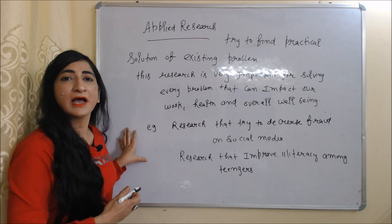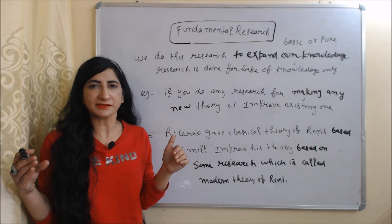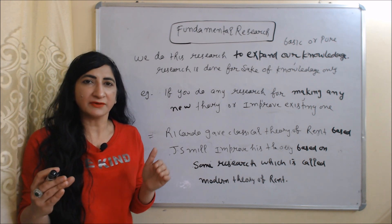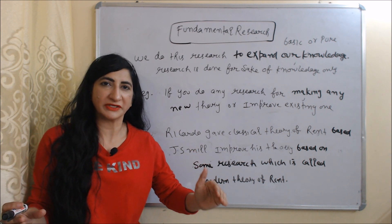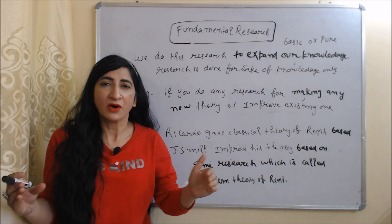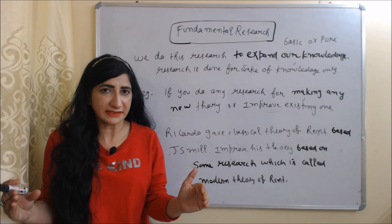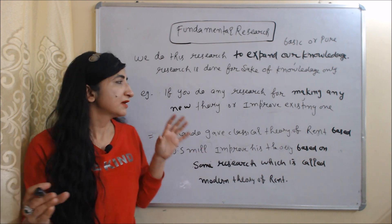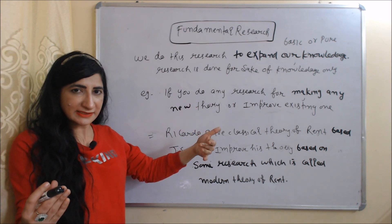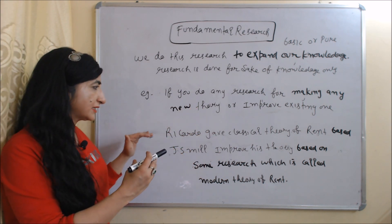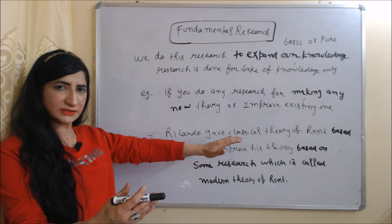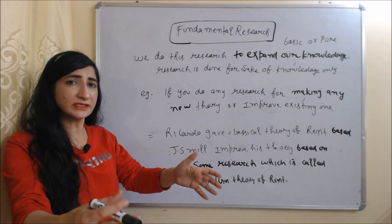Next is fundamental research, also called basic or pure research. We do fundamental research to expand our knowledge — it is done for the sake of knowledge only. For example, if you do research to make a new theory or improve an existing one, that is called fundamental research. Ricardo gave the classical theory of rent based on his research, and J.S. Mill improved this theory based on his research, which is called the modern theory of rent — these are examples of fundamental research.